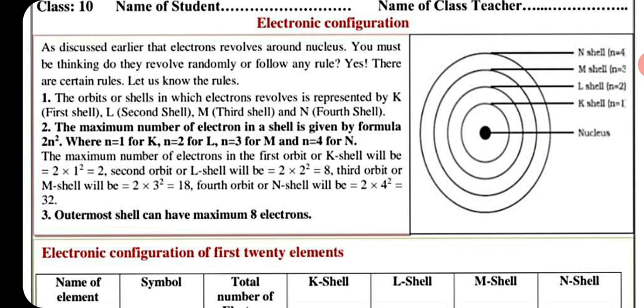So K, L, M, N to write 1, 2, 3, fourth shell also. The maximum number of electrons in the first orbit or K shell will be 2 into 1 square N is 1, answer 2. L is 2 into 2 square because L is second shell, so 8 maximum electrons.